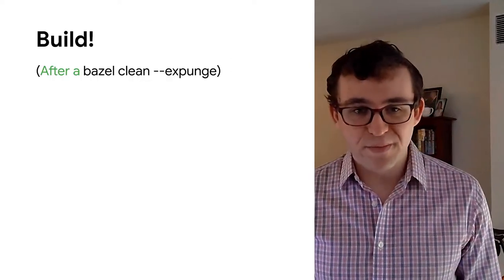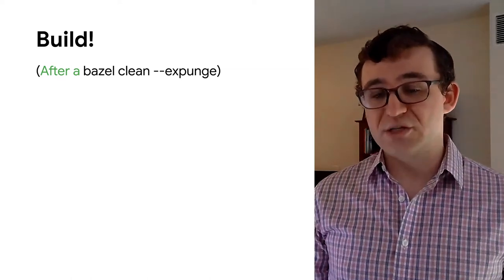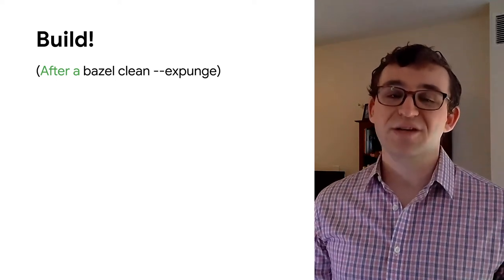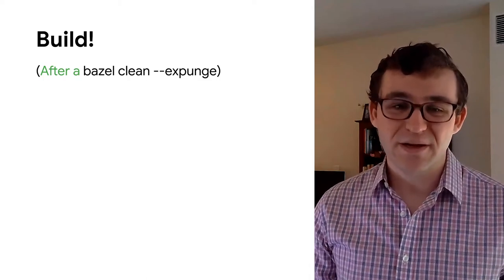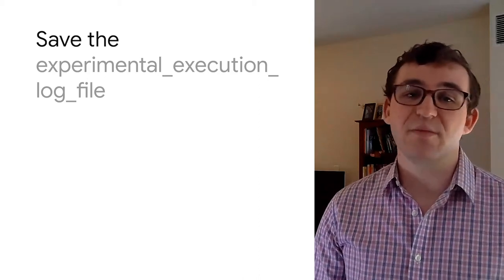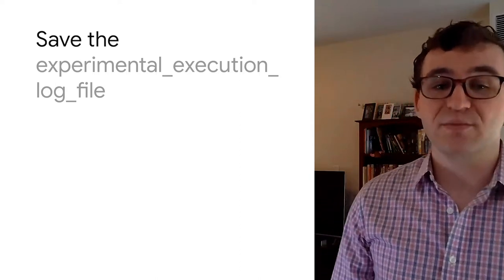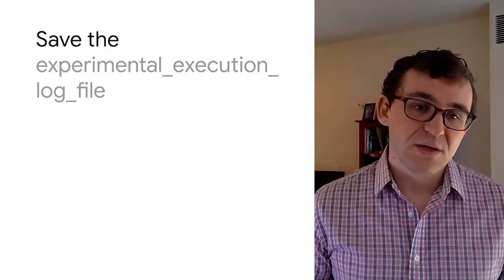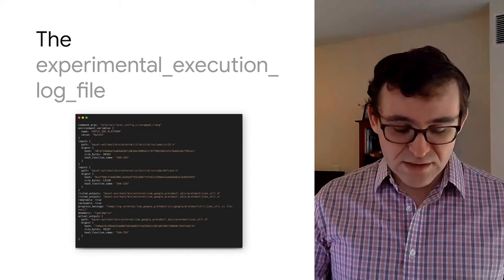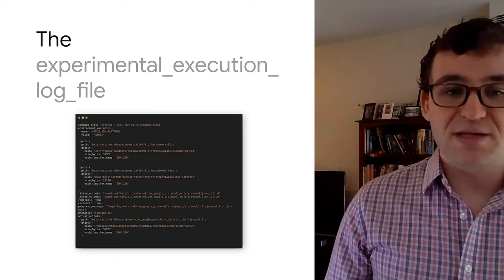Now that we've done the configuration, it's time to build. We're going to start off by running a Bazel clean --expunge — we want all of our actions to get executed. And yes, this is one of the few times anyone is going to tell you that you need to do a Bazel clean. Go run your build and grab a nice cup of tea. If your project is anything like ours, you're building a very large application and may have to wait around half an hour. When you come back and your build is done, remember to save the experimental execution log file you configured Bazel to generate. This file contains a record of every action Bazel has executed, along with some details about that action — environment variables, command line, input files, and output files of every single action in your build.